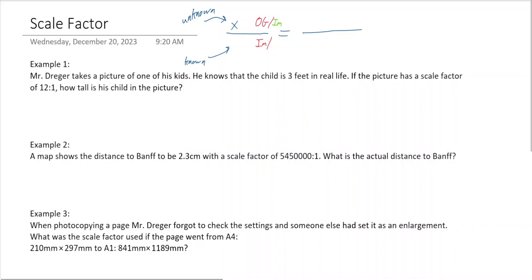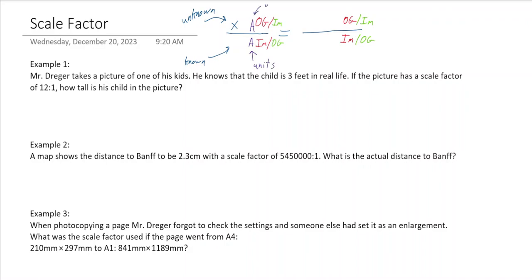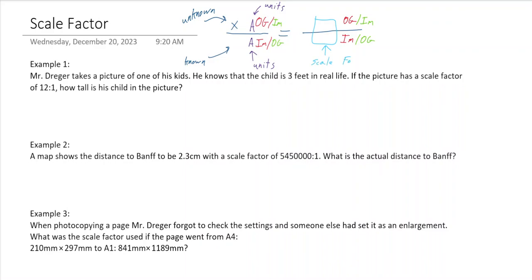If the image is on top, the OG is on the bottom. Whatever is on top on the left side of the equal sign is the same on the right side, and whatever is on the bottom on the left is the same on the bottom on the right. So it's either the red option or the green option — there will be units in here and they have to be the same units. On the right side, all those values give us the scale factor.